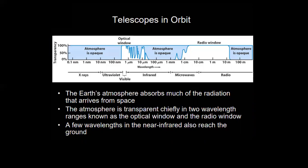Here is a graph of the data we collect from space across the electromagnetic spectrum — extra-ultraviolet, X-ray, ultraviolet, the visible range, infrared, microwaves, and radio waves. The Earth's atmosphere absorbs much of the radiation arriving from space, and the atmosphere is transparent chiefly in two wavelength ranges known as the optical window and the radio window. A few wavelengths in the near infrared also reach the ground.